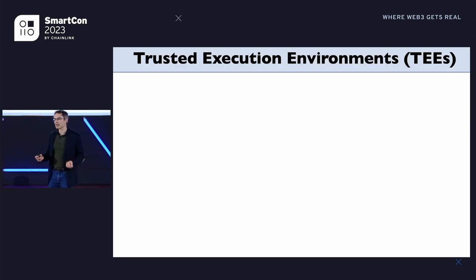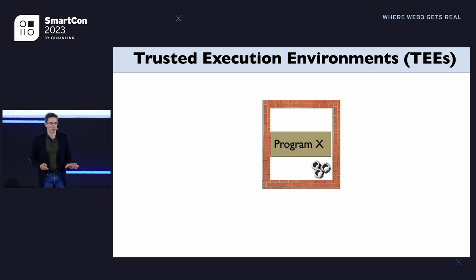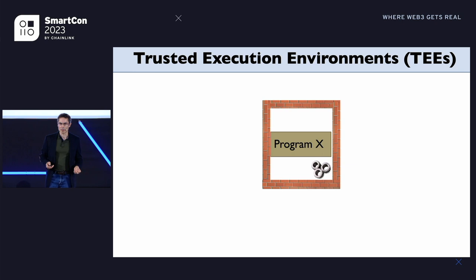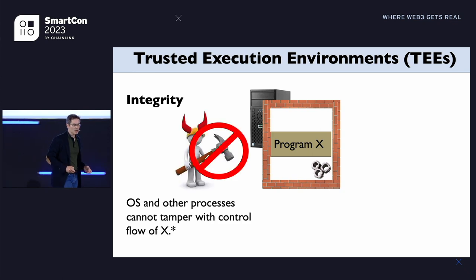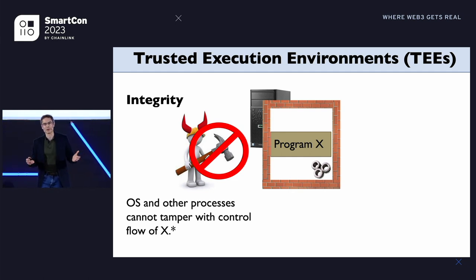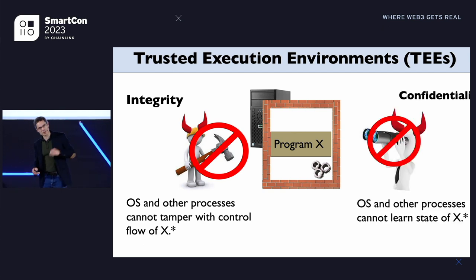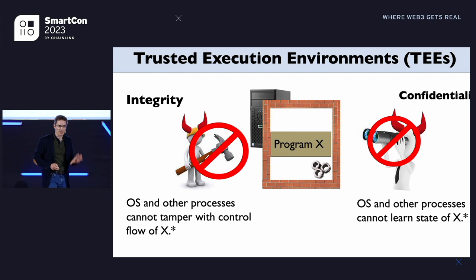PROF makes use of a technology known as a trusted execution environment — a system or environment within which an application can run with special security properties, supported by hardware within the CPU. The first of these properties is integrity: the program can't be tampered with, even by the owner of the host computing device on which the program is running. This property should look somewhat familiar — smart contracts have this property. The second property, one that smart contracts don't have in general, is confidentiality: the program can have secret state, and those secrets are opaque to the entire world, even to the owner of the host computing device.